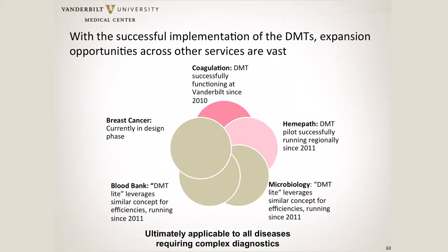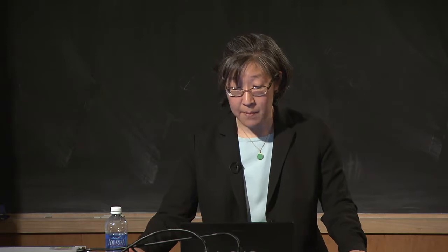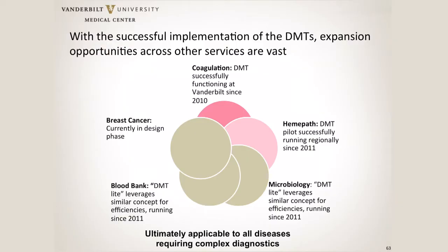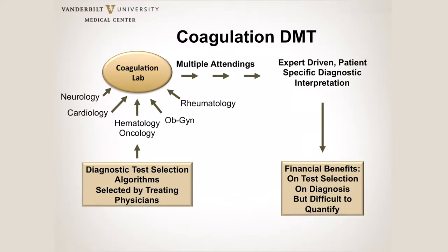The first DMT at Vanderbilt was the coagulation DMT that started in 2010. The nice thing about coagulation is that almost all testing occurs in a single coag lab — the simplest model to begin with. Then we went to the heme path DMT, drawing from multiple different labs within laboratory medicine. Microbiology and blood bank were also brought on as DMT 'lights,' where only sentinel cases go through the process rather than every single case. There's also been talk about bringing this to solid tumor oncology, which is much more logistically challenging because it involves surgical pathology, lab medicine, oncology, and radiology — and temporal issues are more of a problem there as well.